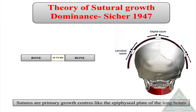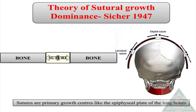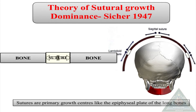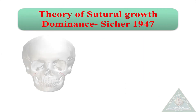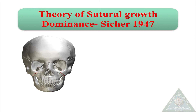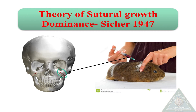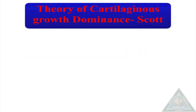The suture theory, proposed by Sicher, states that sutures are primary centers of growth, similar to the epiphyseal plates of long bones. Proliferation of cells occurs here, resulting in growth of the suture and in turn growth of the bone — for example, the growth of the cranial vault. However, this theory does not explain the role of cartilages, and when sutures were transplanted into guinea pigs they did not grow, showing that sutures are not primary growth centers.